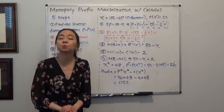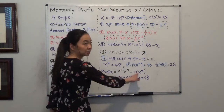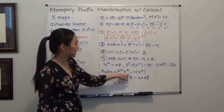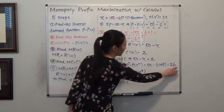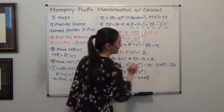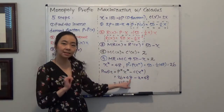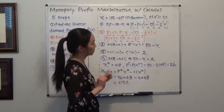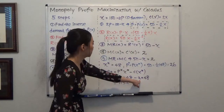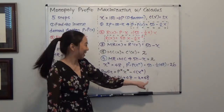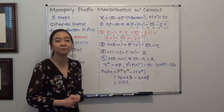If the question asks for profit, you just do revenue minus cost. Revenue is p-star times x-star: that's 26 times 48. Minus my cost, which is 2 times x, so 2 times 48. After calculating that, you'll find the profit is equal to $1,152.